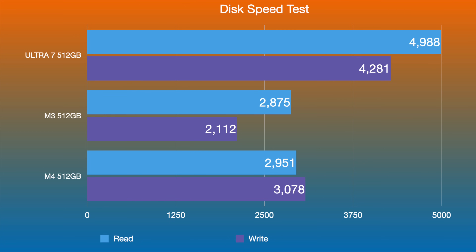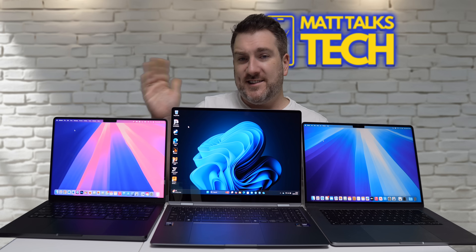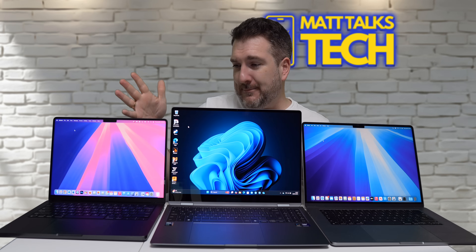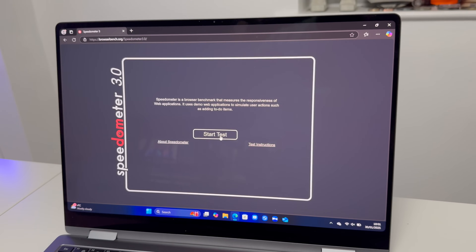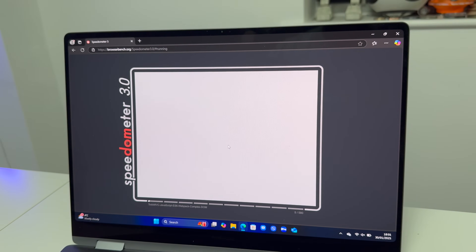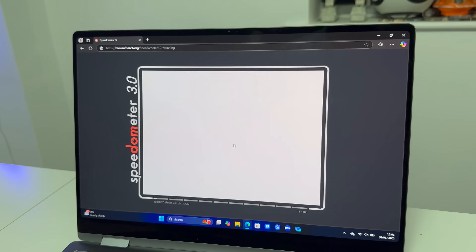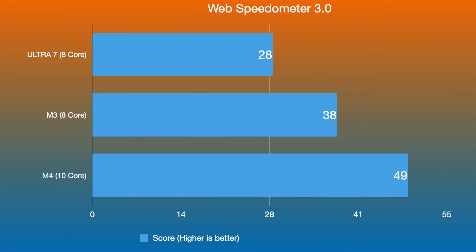For casual browsing performance, I ran the Web Speedometer 3.0 test on all three machines — higher is better. The Ultra 7 scored 28, the M3 scored 38, and the M4 scored 49. The Apple machines with M3 and M4 are definitively ahead in this web browsing benchmark.